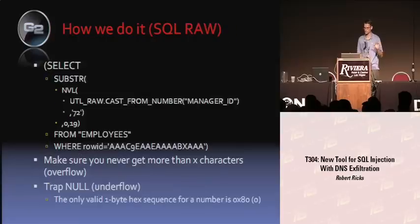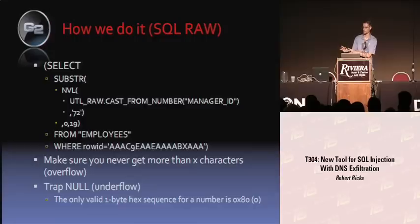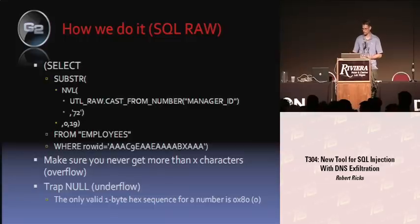Here's another example — this one is for getting raw data, like blobs out of the database. You need to do a substring to make sure you smash it down to the right size. You do a UTL_RAW cast from number, so you have a number and you return it as hex-encoded data. Oracle is happy to do that for you, and hex-encoded data fits nicely into DNS.